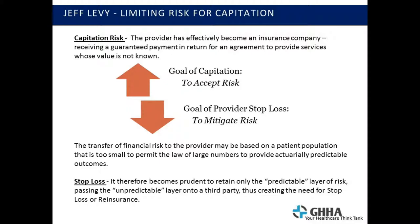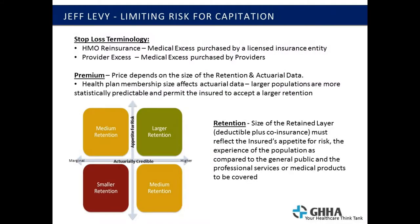This was a 40-slide presentation cut down to three slides in five minutes, so we're just going to hit a few high points. When we refer to taking risk: if it's taken at the HMO level, it's called HMO reinsurance. If it's done at the physician or facility level, it's called provider excess. Both are also known as medical excess — these are synonymous terms.